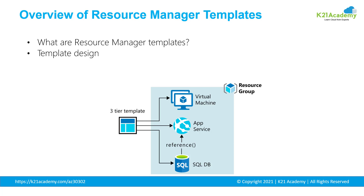You can deploy a Resource Manager template into a resource group as a single operation. An ARM template is a JSON file written in the form of declarative automation. Declarative automation means that you define what resources you need but not how to create them. You define what you need and it's the Resource Manager's responsibility to ensure that the resources are deployed correctly.